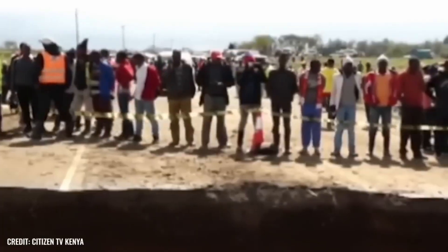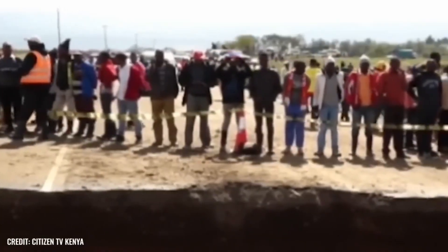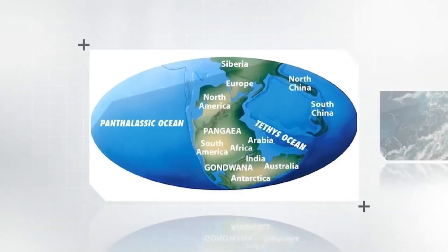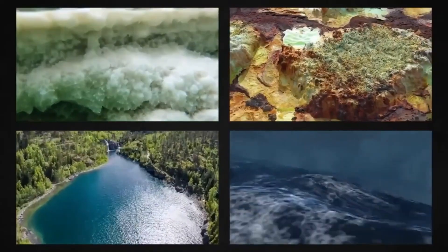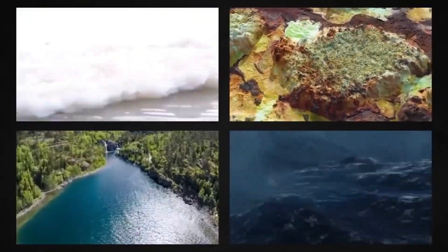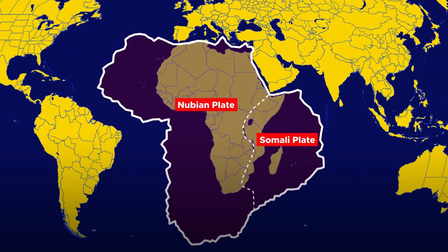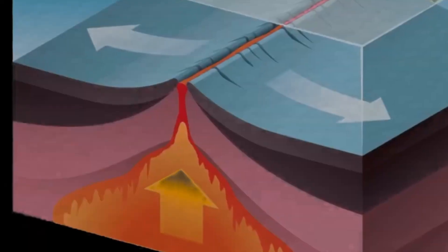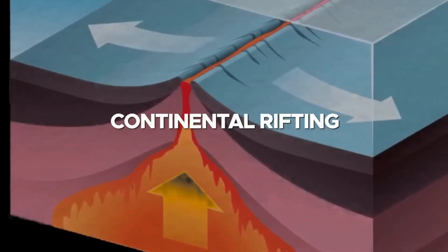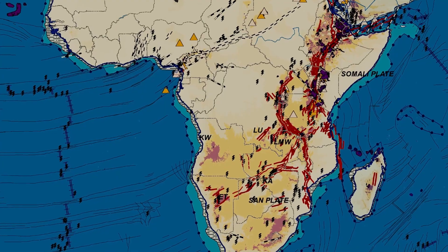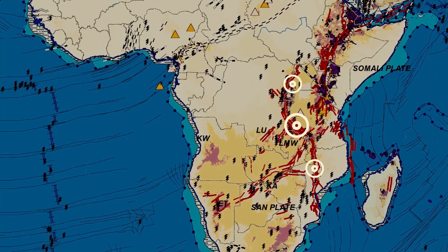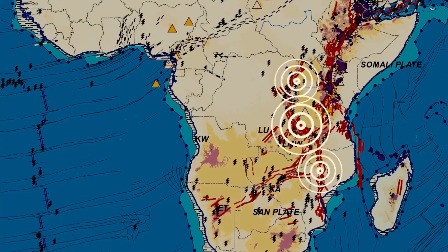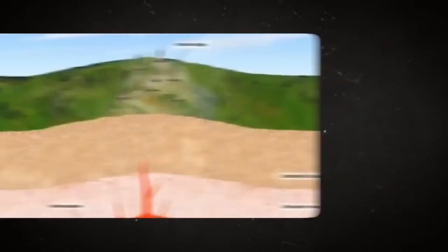The East African Rift represents the initial stages of a process that could ultimately divide the African continent into two separate landmasses. This rifting is driven by convection currents in the Earth's mantle, which create upwelling forces beneath the crust. Over time, the crust stretches, fractures, and thins, making way for molten rock to emerge.